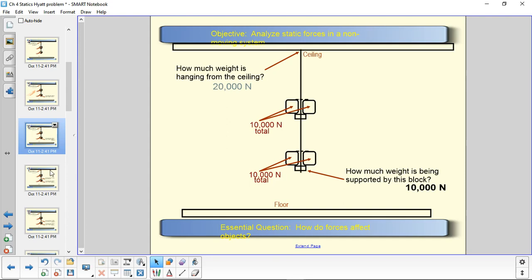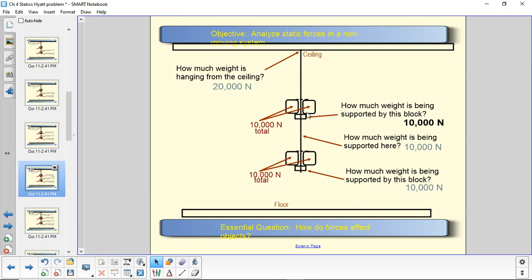Now, how much weight is being supported by this block right here? You can pause it if you need to, but here we're coming to the answer right now. 10,000 newtons. Not surprising. Next question is, how much weight is being supported by the steel rod above the bridge? Pause it for a moment if you need to. 10,000 newtons again. No surprise.